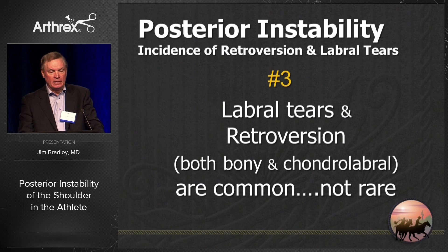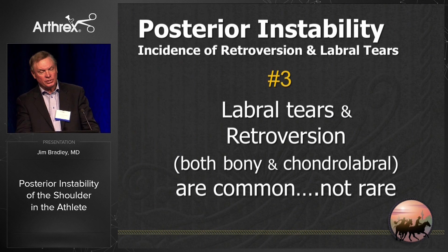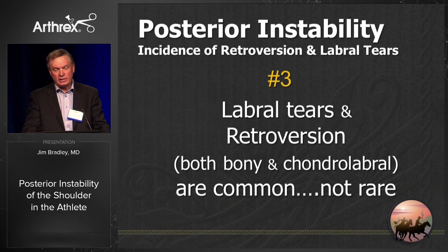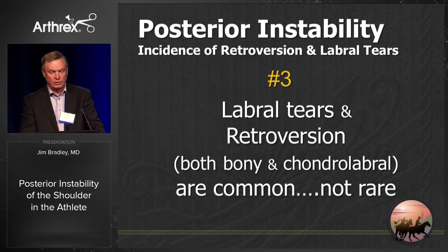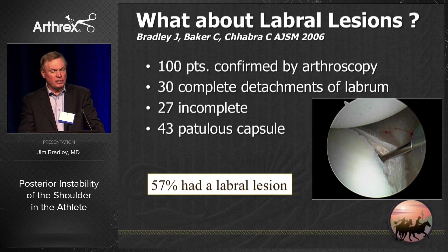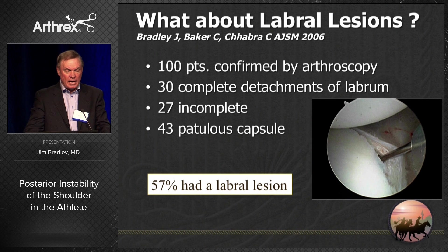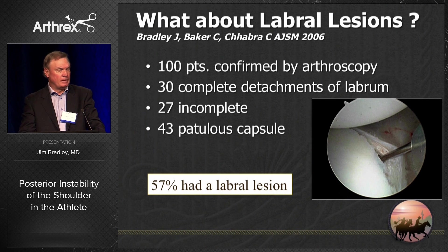The third thing we learned is that the literature says labral tears and retroversion are common and rare — that's not true. Both bony and chondrolabral lesions are very common in posterior instability of the shoulder. Of our first 100 patients published, 57% had some form of labral lesion at the back. They are not rare — they're common.